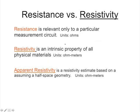We need to talk about resistance versus resistivity. Resistance is in ohms and is relative to a particular circuit. Resistivity is an intrinsic property of all physical materials — it can be high or low. A high resistivity is characteristic of an insulator, and a low resistivity is characteristic of a conductor.